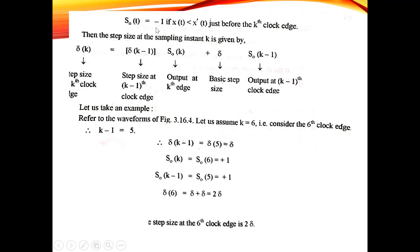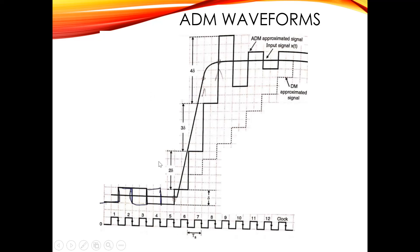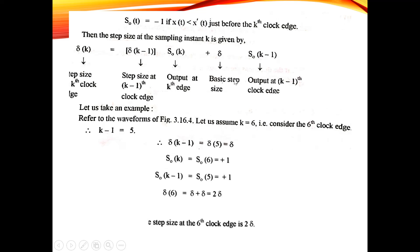Mathematically, the output of the ADM system S₀(t) is expressed as: plus one if x(t) is greater than x'(t) just before the clock pulse, or negative if x(t) is less than x'(t) just before the clock pulse. The step size at sampling instant k is found using the formula: Δ(k) = Δ(k-1) · S₀(k) + δ · S₀(k-1), where Δ(k) is the step size at the k-th clock pulse, Δ(k-1) is the step size at clock pulse k-1, S₀(k) is the output at the k-th clock pulse, δ is the basic step size, and S₀(k-1) is the output at clock pulse k-1.